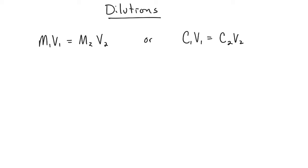And in this equation, the M stands for molarity, and the V stands for volume. And because you can use the formula for more units than just molarity, a lot of times you see it written as C1V1 equals C2V2, where the C just stands for concentration in whatever units you want to use.